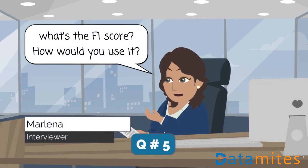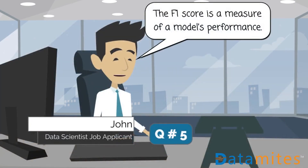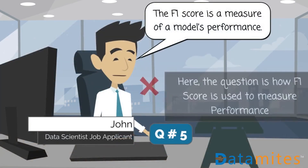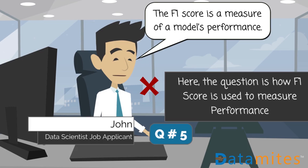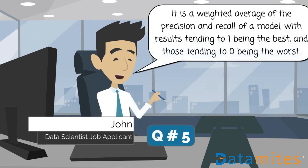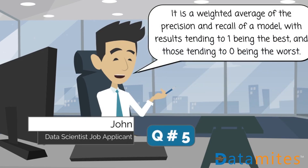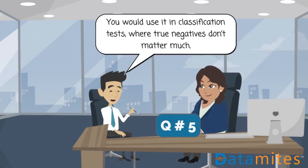What's the F1 score? How would you use it? The F1 score is a measure of a model's performance. It is a weighted average of the precision and recall of a model, with results tending to 1 being the best and those tending to 0 being the worst. You would use it in classification tests where true negatives don't matter much.